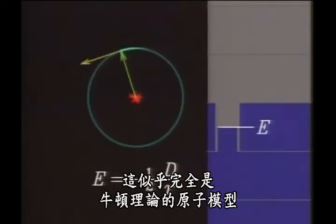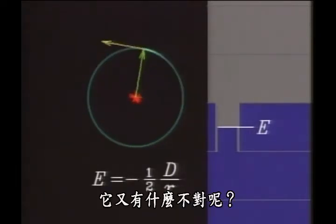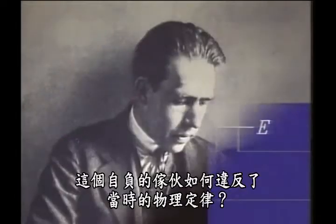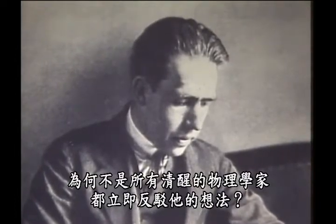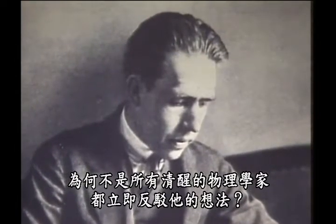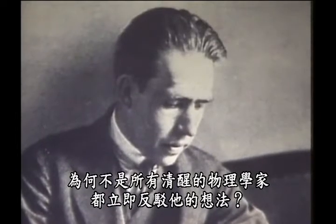Since this seemed to be the very model of a Newtonian atom, what was the matter with it? In other words, how had this upstart violated the physical laws of his day? And if in fact he really had, why didn't all right-thinking physicists dismiss his ideas on the spot?